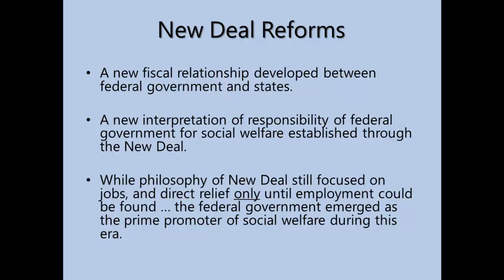Altogether a new fiscal relationship developed between the federal government and the states as a result of the New Deal, and a new interpretation of the federal government's responsibility for social welfare was established. For the first time, the federal government recognized a responsibility to provide for the welfare of its citizens through the provision of services when necessary. The federal government emerged as the prime promoter of social welfare during this era. Still, the underlying philosophy of the New Deal focused on work, with direct relief only until someone could get their own job. And the basic philosophy about the worthy and unworthy poor, and the morality of work — those things didn't change.